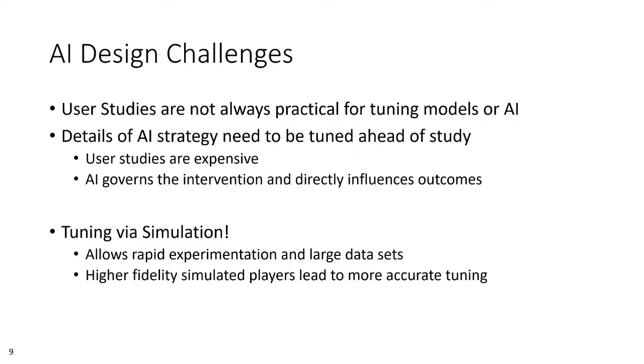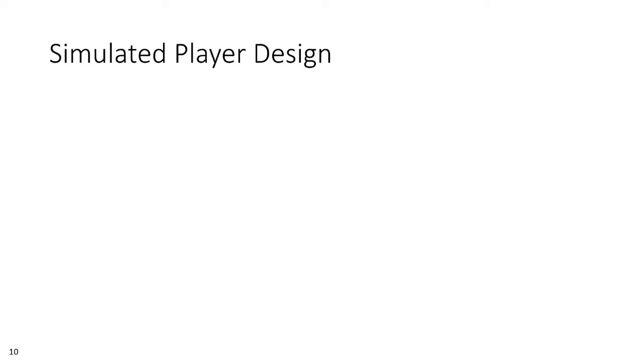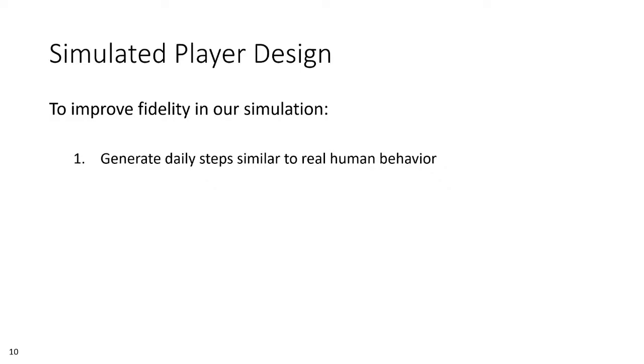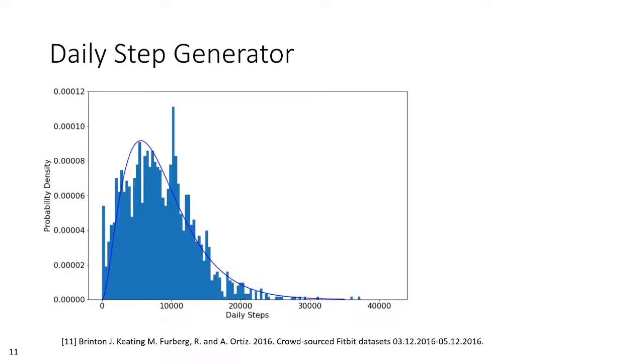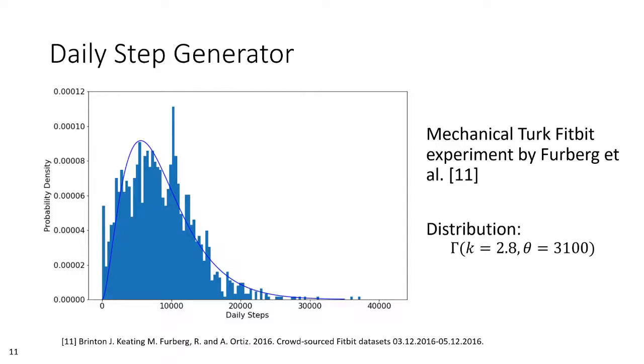But there was a two-fold challenge in creating these simulated players in a way that would be useful for evaluating our AI. First, we needed a method for generating steps that reflected the data we would expect from human players. Second, we needed to provision the simulated players with a representation for SCO that reacted to comparison events. For the first challenge, we leveraged existing daily human step behavior data, obtained from a Mechanical Turk study by Furberg and others in 2016. Shown here is a histogram of that data set overlaid with a probability density function of a fitted gamma distribution, from which our step generator would randomly draw to generate initial daily steps.